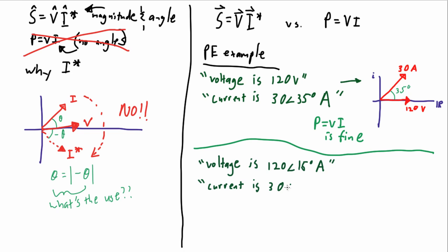If the question provides you with voltage angles, and it also gives you current angles, then the PE has not set up a relative difference. It has set up absolute angles. In that case, the P equals VI will not work.